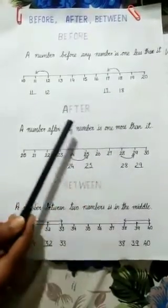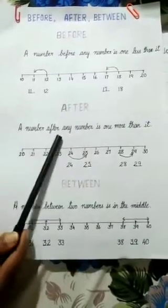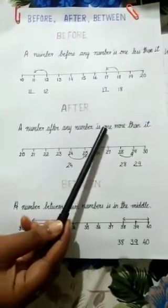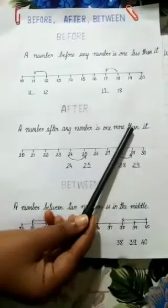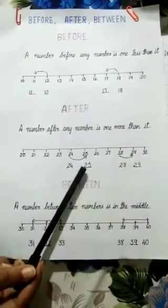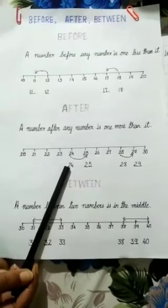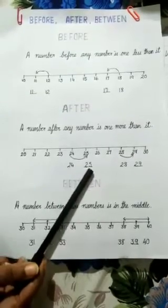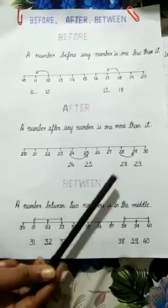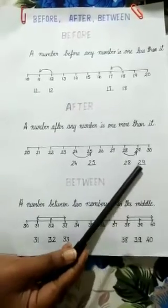Now after. A number after any number is one more than it. What comes after 24? 25. What comes after 28? 29.